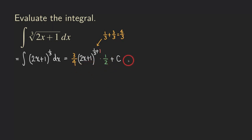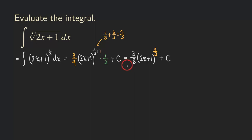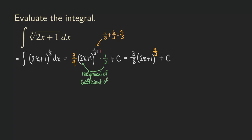Basically that's the answer, but we need to clean up this expression to make it look simpler. So we are going to get 3 over 8, times 2x plus 1, to the 4 over 3, plus C. How do we get 3 over 8? 3 times 1 gives us 3, and 4 times 2 gives us 8. Just make a note: remember, this 1 over 2 is the reciprocal of the coefficient of the linear term x.